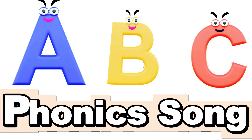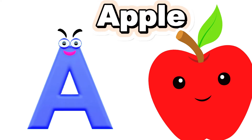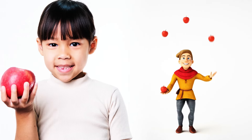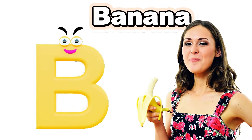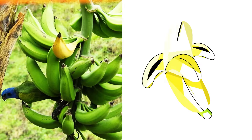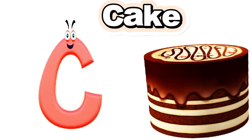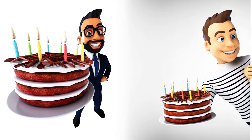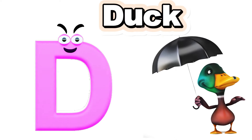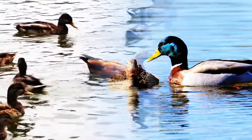ABC phonics song. A is for Apple. a-a-a-Apple. B is for Banana. b-b-b-Banana. C is for Cake. c-c-c-Cake. D is for Duck. d-d-d-Duck.